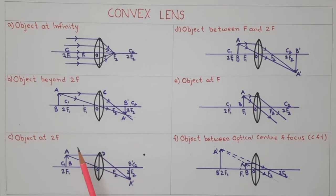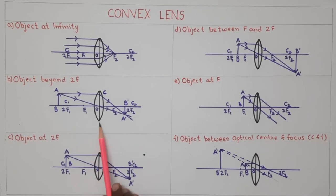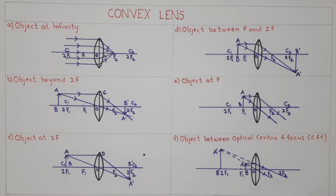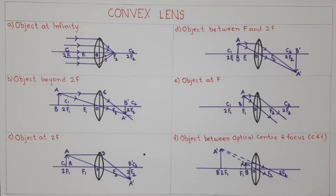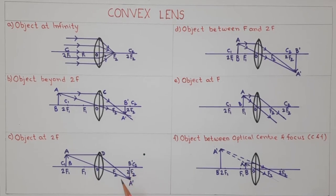The practical application of this case: a simple camera has a convex lens. The object is at a distance beyond the focal length of the convex lens, and the convex lens forms a real, inverted, and small image of the object on the film.